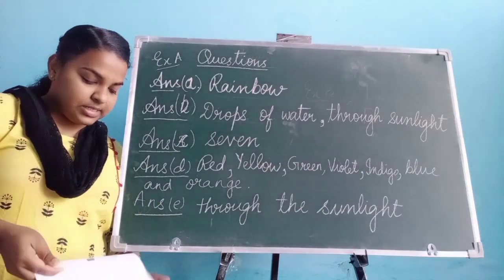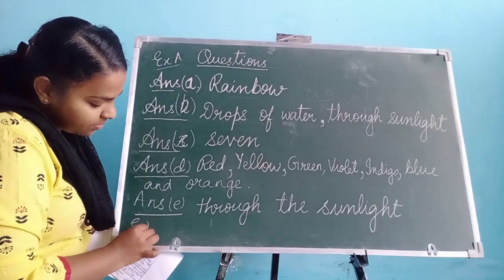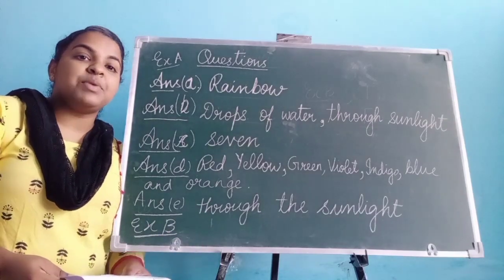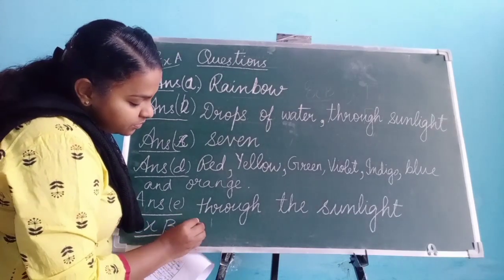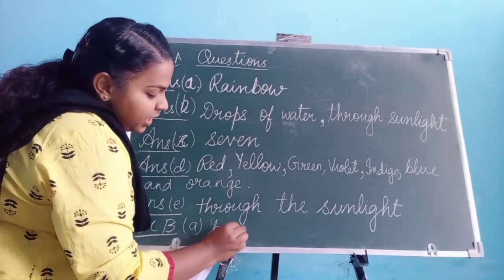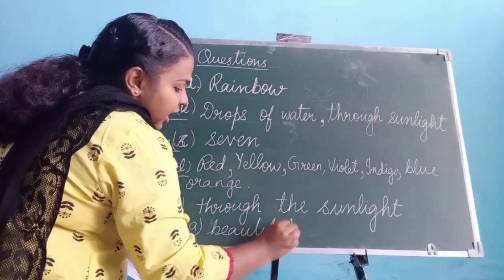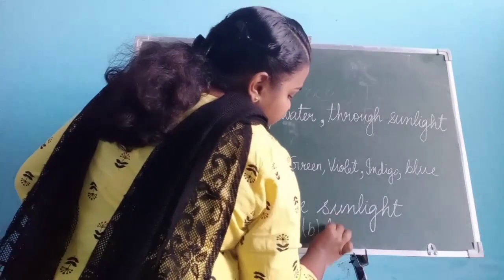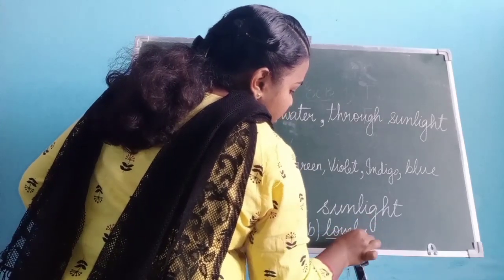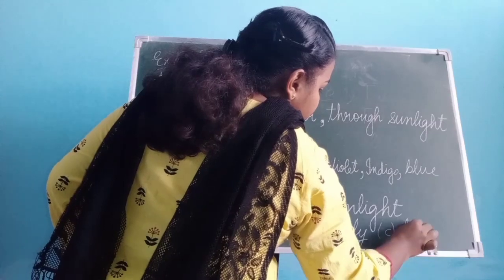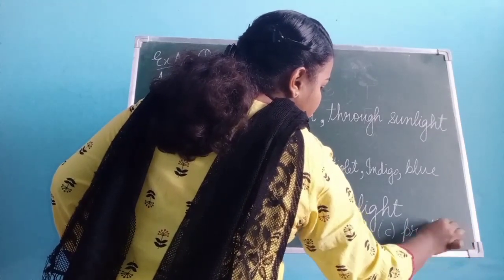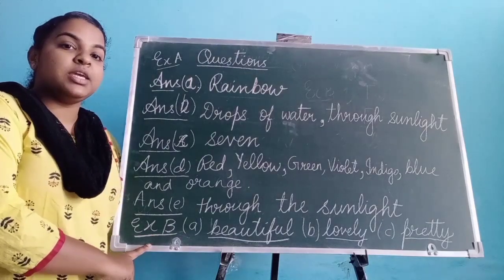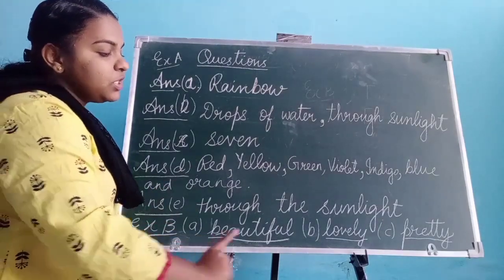Now next is Exercise B. Here you have to give three describing words from the poem. The first word is 'beautiful.' The second one is 'lovely.' The third one is 'pretty.' So the describing words are: beautiful, lovely, pretty.